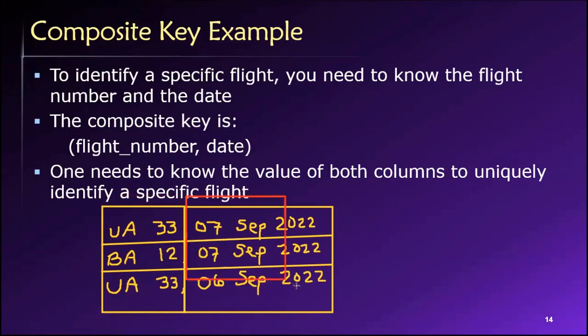Similarly, if I look at this column, which is a date column, we can see that we have repeating values here as well. These two, for example, are flights that both took place on the 7th of September. Therefore, we cannot use this column by itself as a way of uniquely identifying a row either, because this has duplicate values. So this column cannot be a unique key. This column cannot be a unique key.